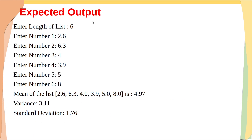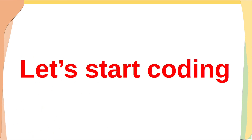What is the expected output? Enter length of list: 6, so n = 6. Enter number 1: 2.6, number 2: 6.3, number 3: 4, number 4: 3.9, number 5: 5, number 6: 8. The mean of the list is 4.97, variance is 3.11, and standard deviation is 1.76.